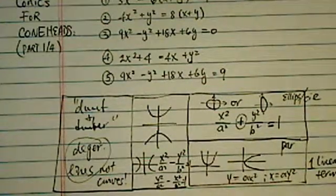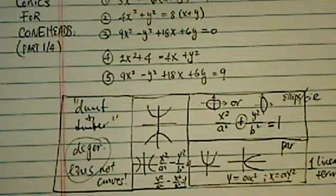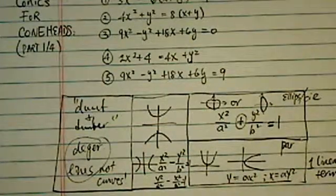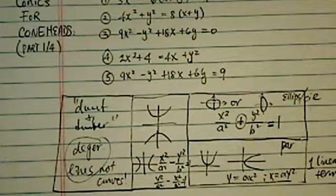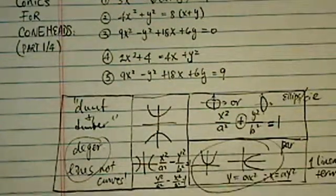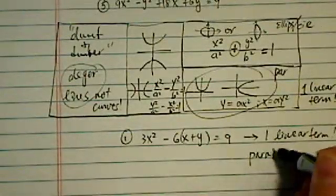Let's examine the first one. Three x squared minus six x plus y equal to nine. We have one linear term. So guess what? This is the half together one. So this is what we call a parabola.